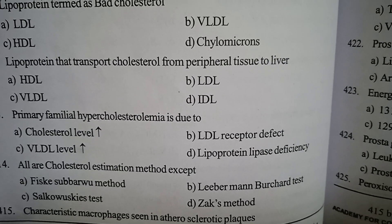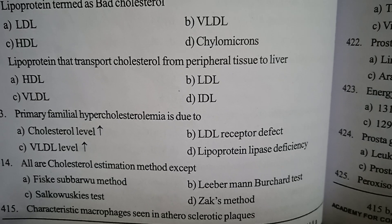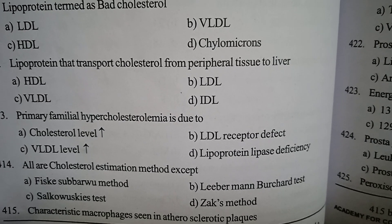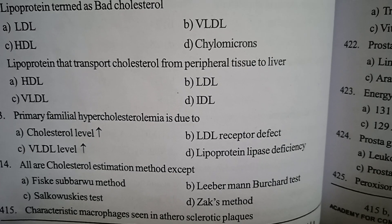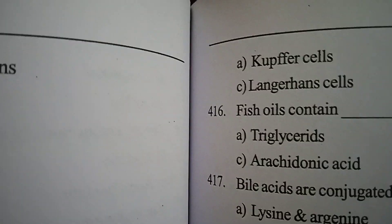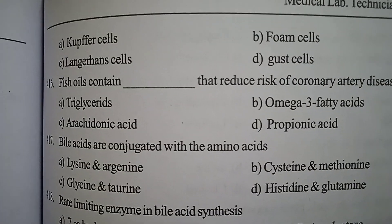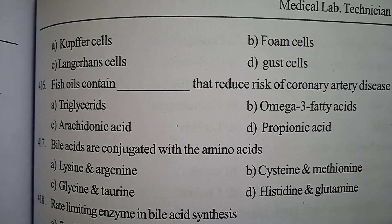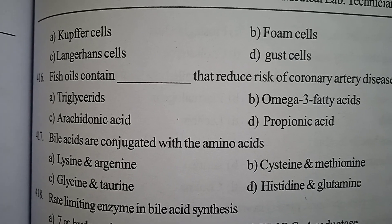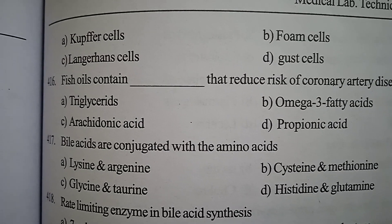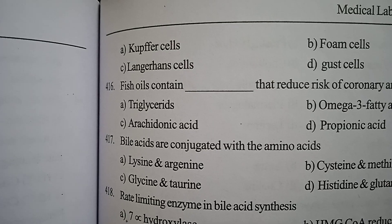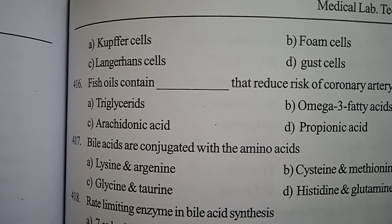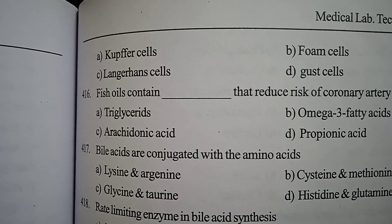Next one: characteristic macrophages seen in atherosclerotic plaques — options include foam cell, Langerhans cell, and giant cell. Correct answer: option B, foam cell.